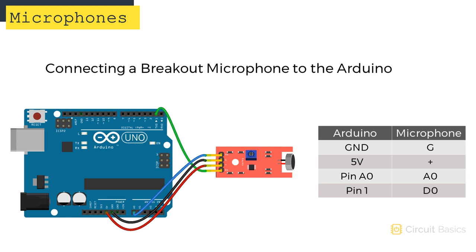Turning the screw clockwise decreases the threshold and makes the mic more sensitive. Turning it counter-clockwise increases the threshold and makes the mic less sensitive. Connect the microphone module to the Arduino like this: pin A0 on the mic connects to analog pin A0 on the Arduino, G connects to ground, positive connects to 5 volts, and the D0 pin of the mic connects to digital pin 1 on the Arduino.